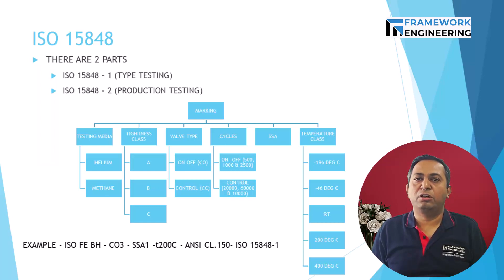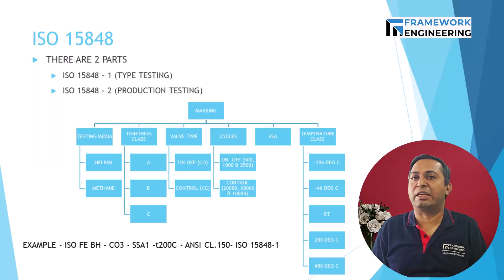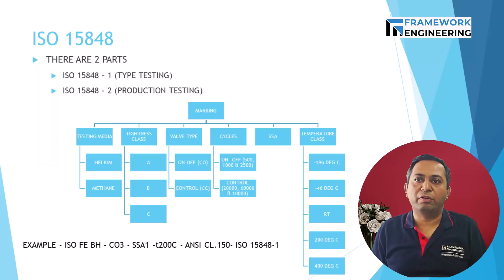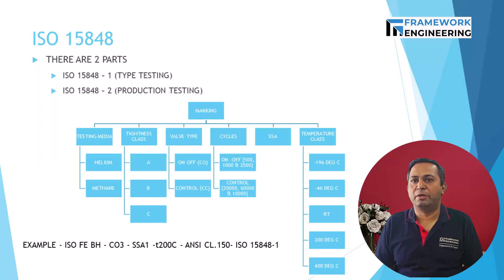One important point to highlight is that the unit of measurement and the unit defined by the standards are two different things. Hence, one must take care when reporting the value in a report. Regarding valve type — that is on-off valve or control valve — there is a number of cycles to be performed based on the valve type.